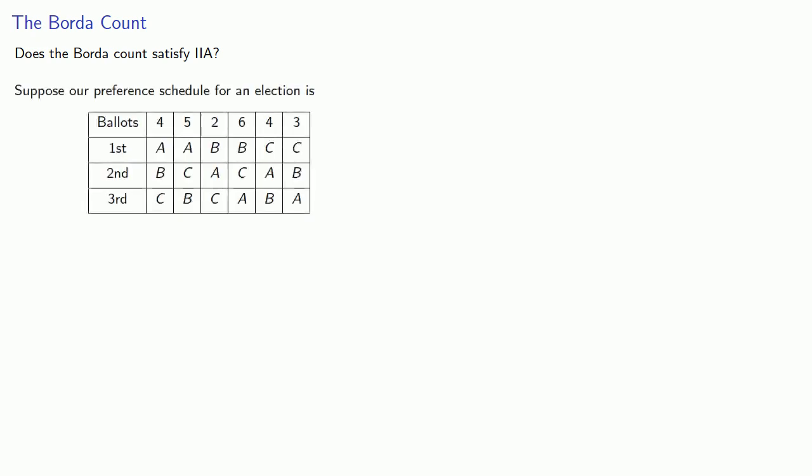Does the Borda count satisfy independence of irrelevant alternatives? Well, suppose our preference schedule for an election is as follows. Now, if we use a Borda count, because there's three choices, then a first place vote gets two points, a second place vote gets one point. And so using a Borda count, A gets 24 points. B gets... And C gets... And since C has the most points, C wins.